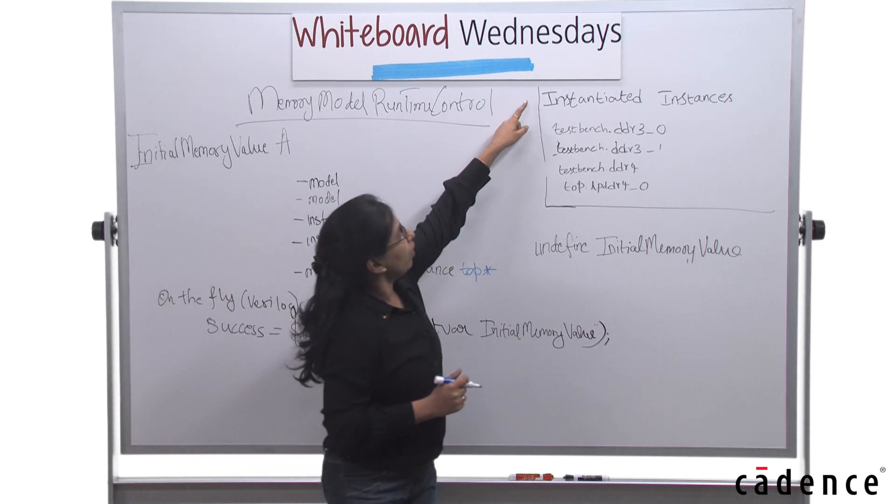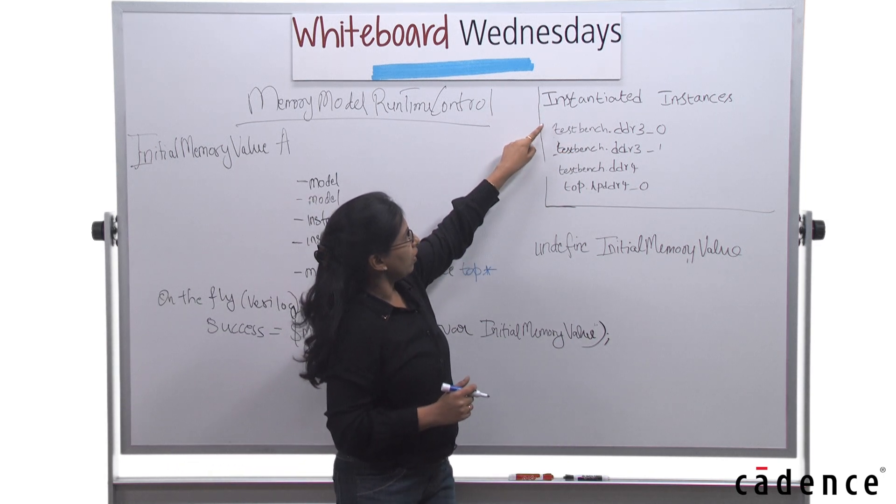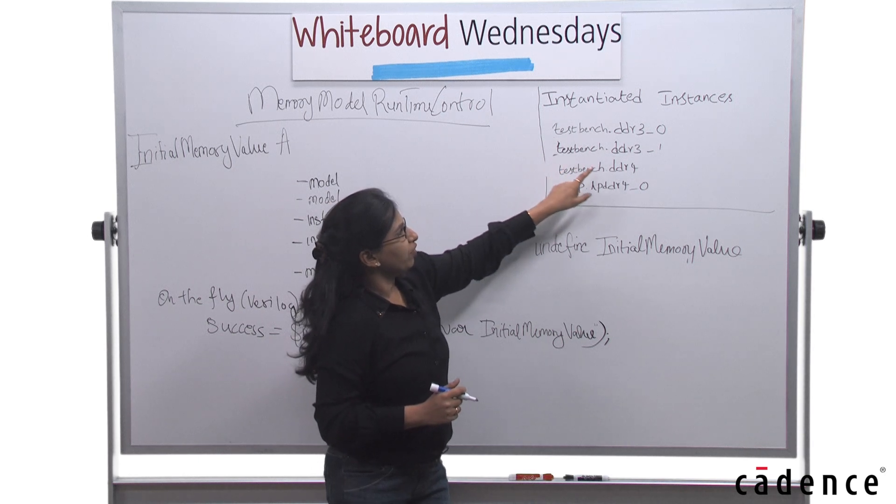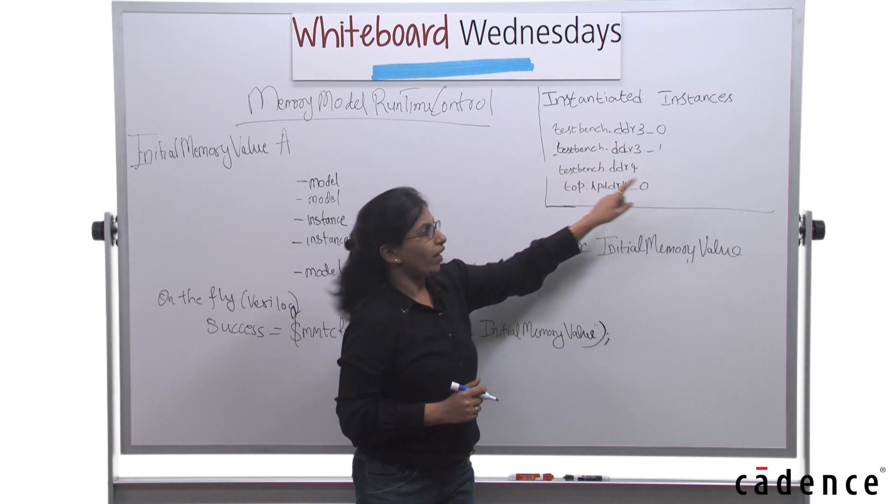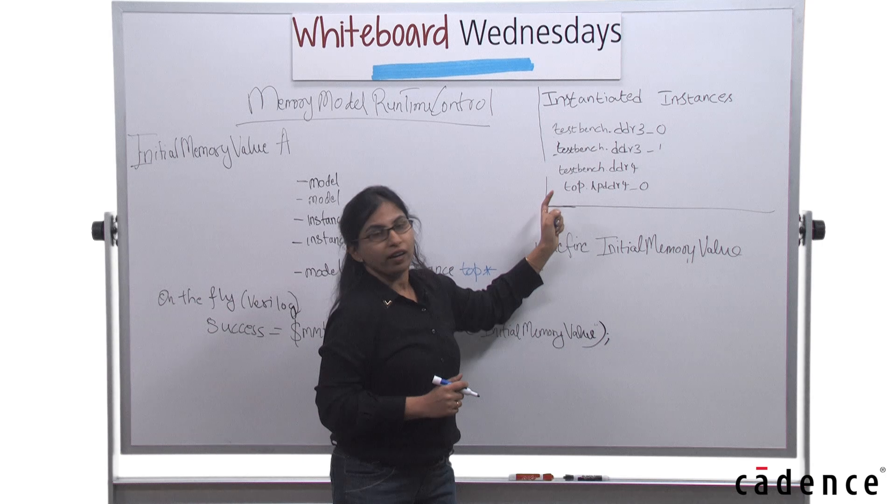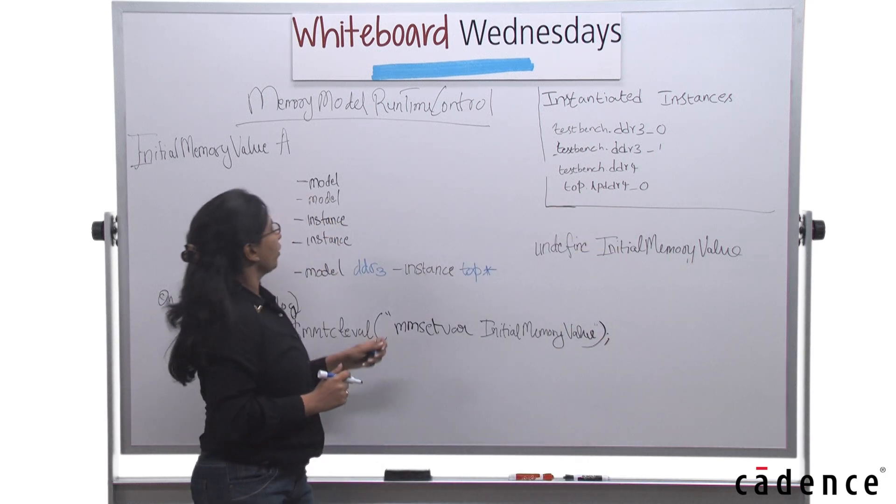So let's assume all your instantiated instances are as below: testbench.ddr30, testbench.ddr31, testbench.ddr4, and top.lpddr4.